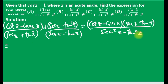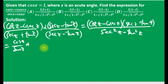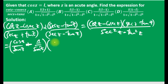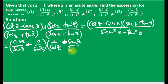From our Pythagorean identity, sec squared z minus tan squared z equals one. So we have cos z over sin z minus one over sin z, since sec z is one over cos z.